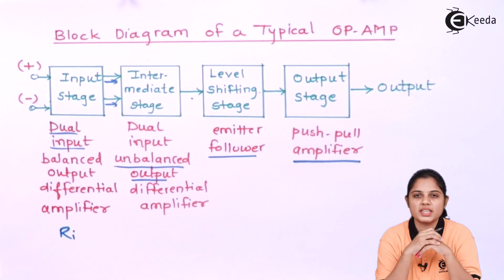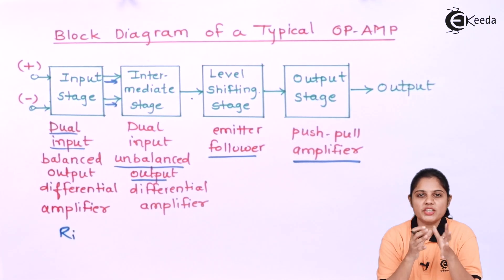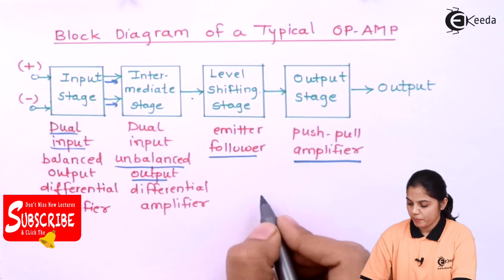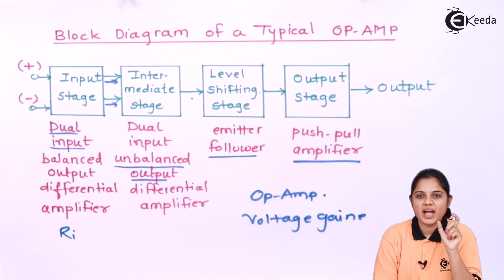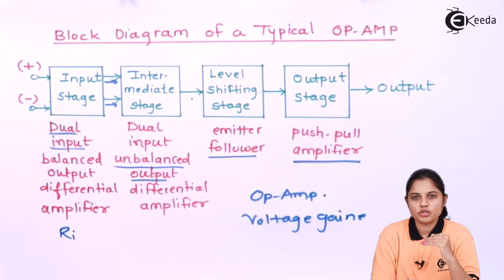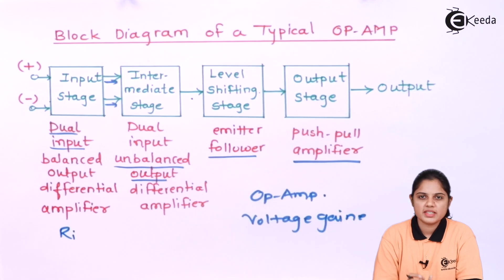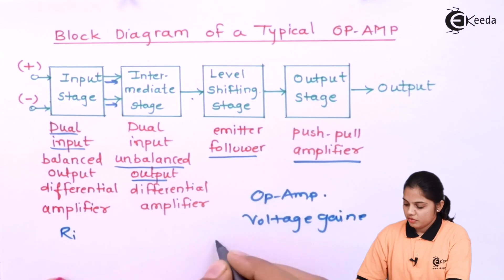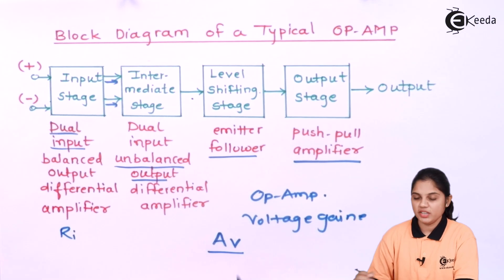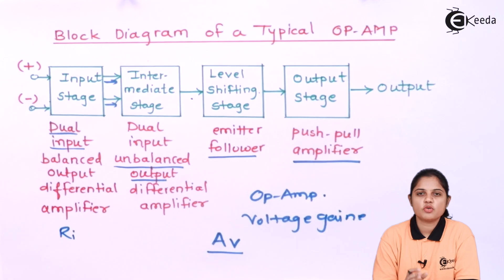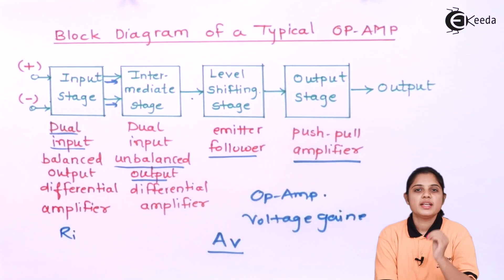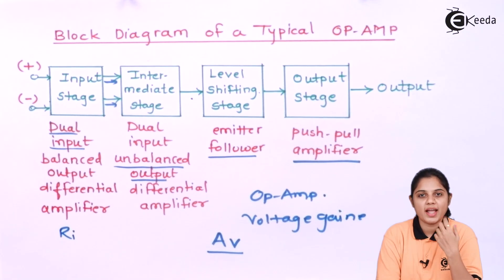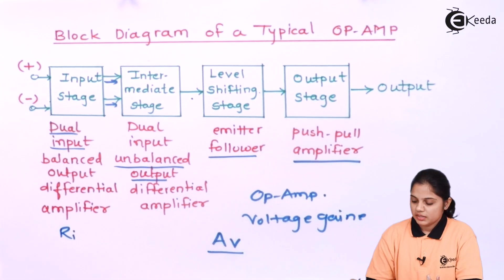The output stage is a push-pull amplifier where the signal gets amplified to increase the voltage gain. For an op-amp, voltage gain is a very important parameter — it should be as high as possible. Looking at the ideal characteristics, the open-loop voltage gain, denoted as Av, should be infinite, but practically it should be as high as possible. This high voltage gain is determined by the output stage, where the signal is boosted and given as an output.